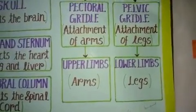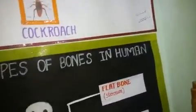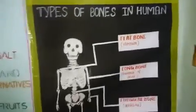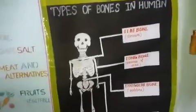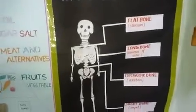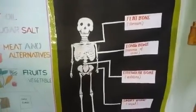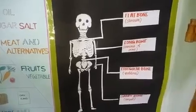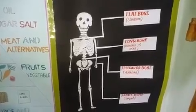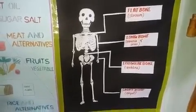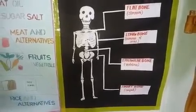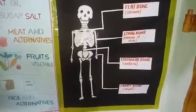Next is the types of bones present in the human body. Flat bones are present in the center of the sternum. Long bones, irregular bones, and vertebrae are also present. Short bones are found in the wrist.